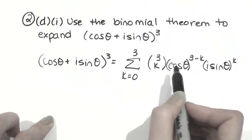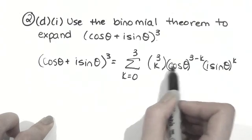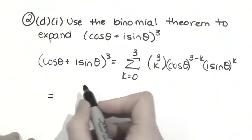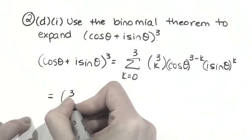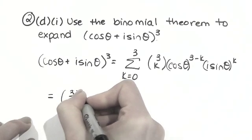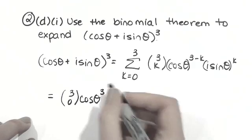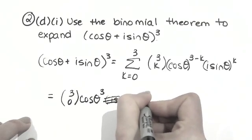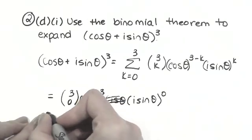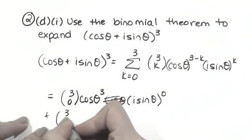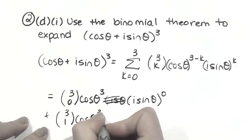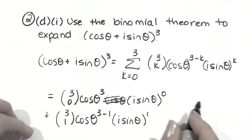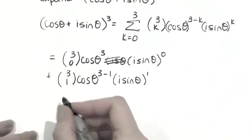So what we have is the sum from k equals 0 to 3, and we sub in k equals 0, k equals 1, k equals 2, then k equals 3, and add them all together. When we have k equals 0, we have 3 choose 0, cos theta to the 3 minus 0, so just 3, and then i sine theta to the power of k equals 0.